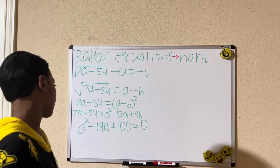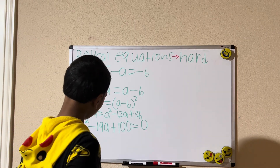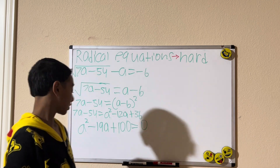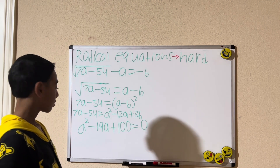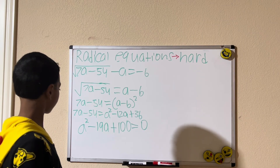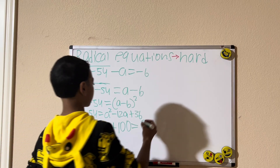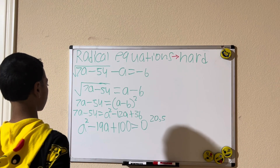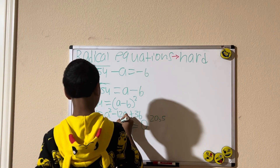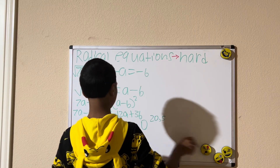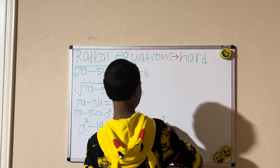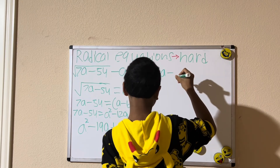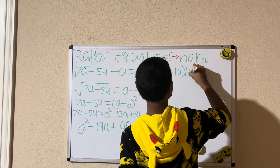Now let's figure out two numbers that multiply to 90 and add to negative 19. Let's check the factors: 20 and 5 give 25, not 19; 25 and 4 don't work either. What about 10 and 9? 10 times 9 is 90 and 10 plus 9 is 19 — yes! So we factor as a minus 10 times a minus 9 equals zero, giving us a equals 10 and a equals 9.